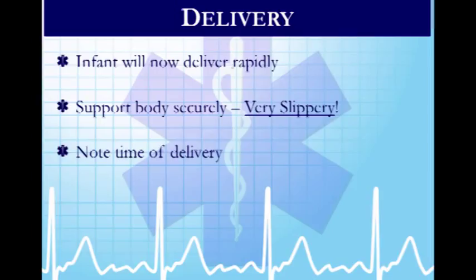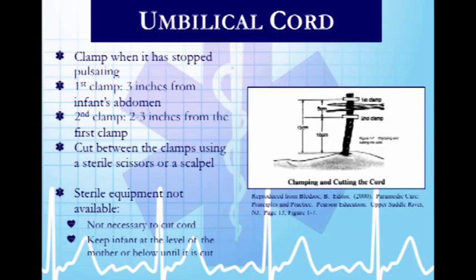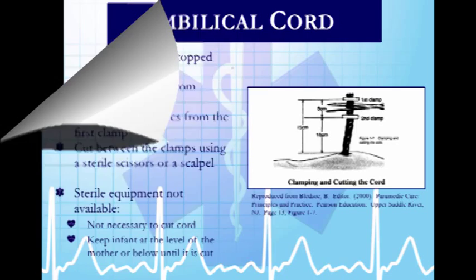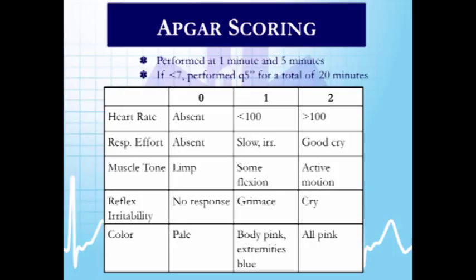For umbilical cord management: clamp approximately three inches above the baby's abdomen, place a second clamp two to three inches from the first, then cut between the two with sterile scissors. If sterile equipment is not available, do not cut the cord. Instead, place the baby on mom's tummy at the level of mom or below to prevent abnormal blood flow.